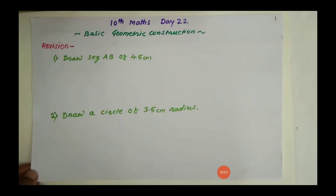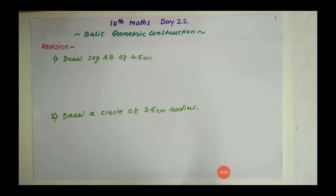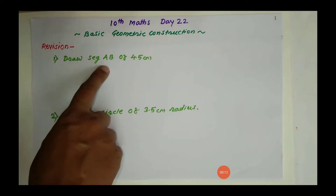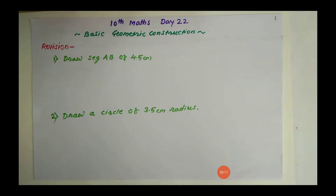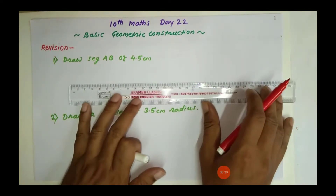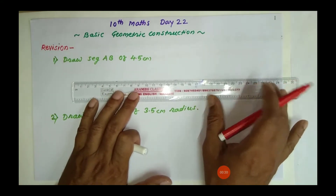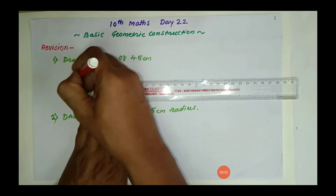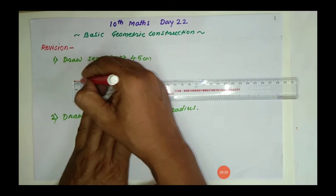Today is the 22nd day of your bridge course and today we will learn basic geometric construction. First we will start with revision. Draw a segment AB of 4.5 cm — it is very easy, just take your ruler scale and start from 0. This is segment AB, 4.5 cm.